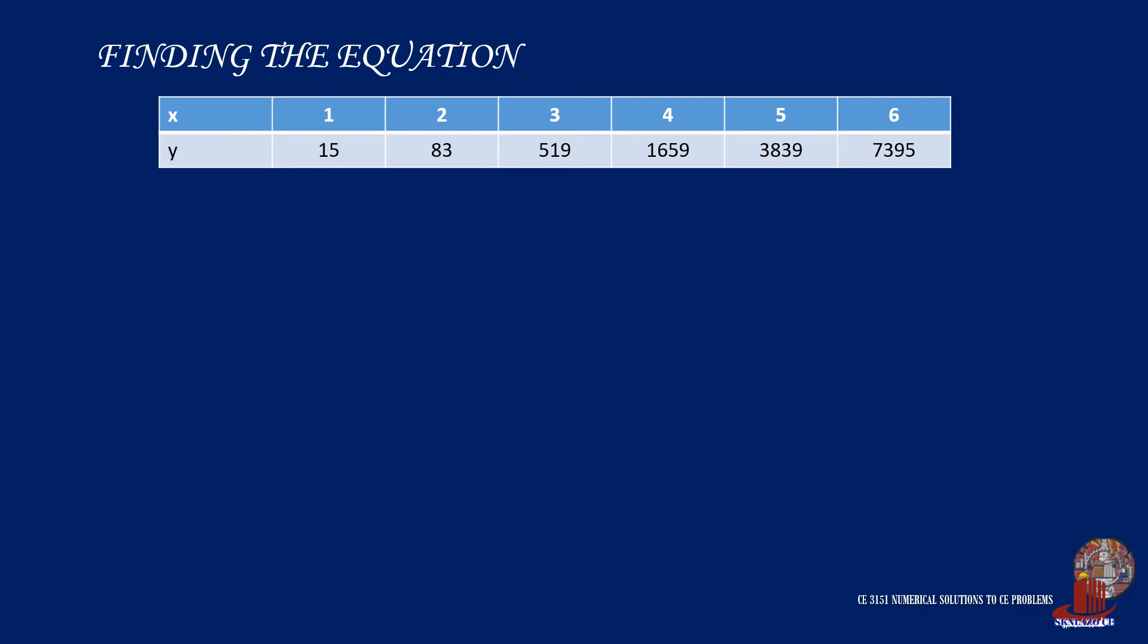Getting back to our example, we already found out that the polynomial format for the data set is A X cubed plus B X squared plus C X plus D. In order to identify the values of the other variables other than X, we need to substitute the values of X in the equation. So for X equal to 1, Y is then computed as A times 1 cubed, plus B times 1 squared, plus C times 1, plus D.